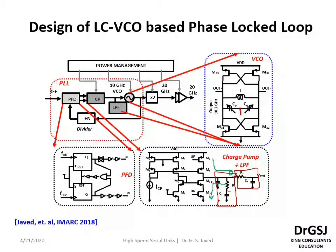The PLL also has a power management block containing three main features. First, it contains a bandgap reference (BGR) which generates a reference voltage. Second, it contains a voltage regulation circuit specifically for four blocks: the charge pump, the VCO, the doubler, and the buffer. Finally, there is a current distribution circuit used to bias all the current blocks and current sources present, such as the ICP in the charge pump.